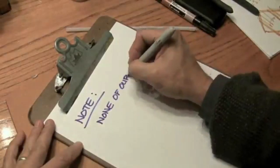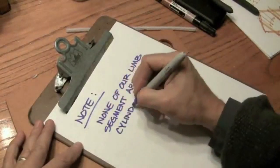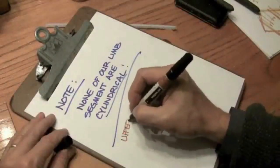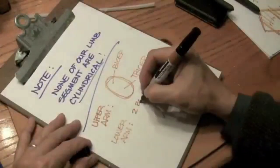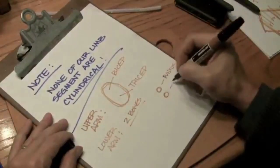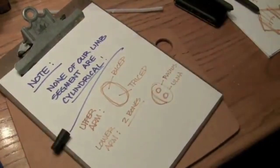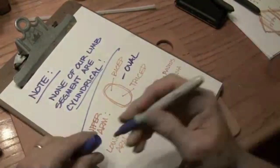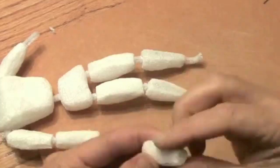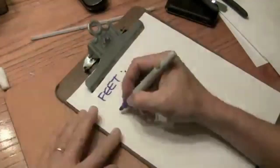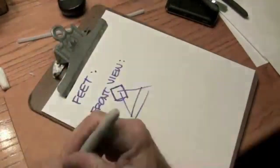Here's an important note: none of our limb segments are cylindrical. Our bicep-tricep is an oval. Our lower arm has two bones in it, of course: radius and ulna, and then a muscle inside which actually makes our lower arm a triangle till it tapers down to the wrist where it becomes an oval.